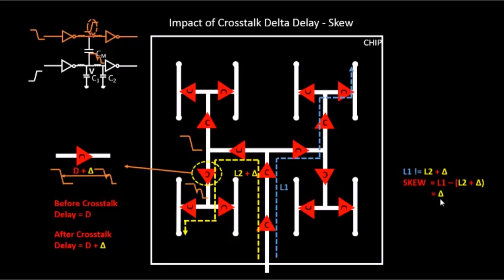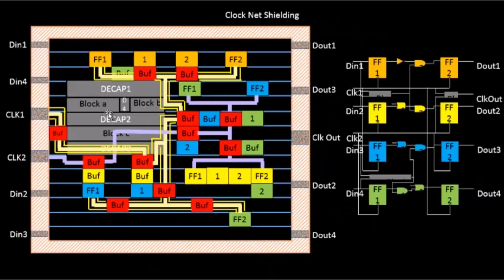We've only talked about a handful of buffers here, but for a multi-million gate chip, this delta might grow very significantly. That's the impact of crosstalk, and that's why we try to protect our clock nets by putting shields around them. Shielding is one technique to protect nets from crosstalk; there are other techniques as well covered in the crosstalk videos. These slides are taken from that course, which has a lot more detail on similar topics. That's the idea behind clock net shielding.